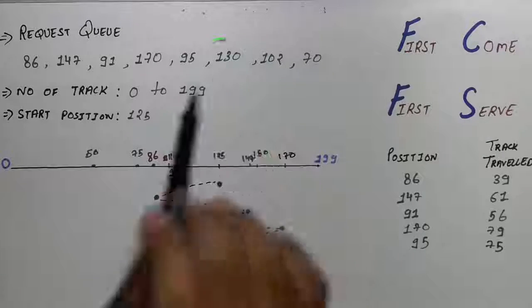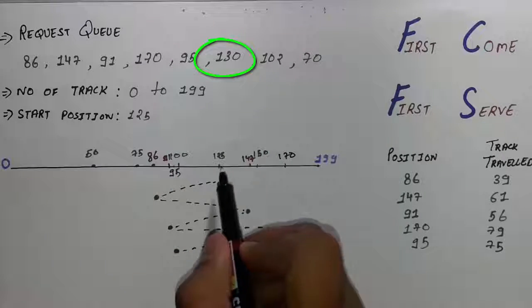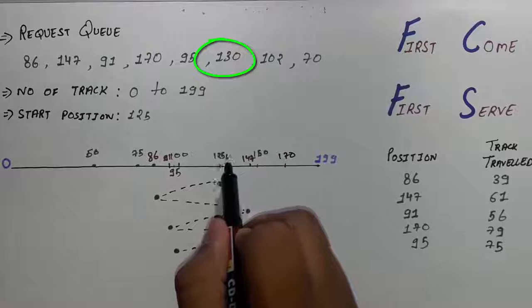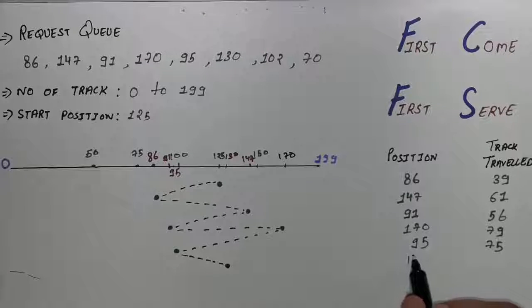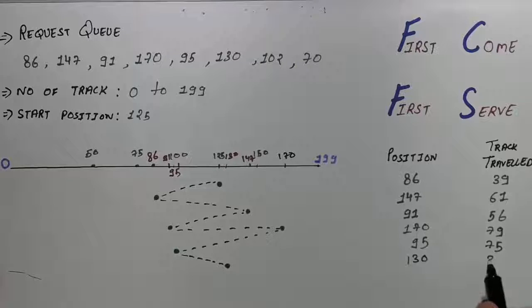You can see in the question the next number we have to move the header is here. Now our header is here and then again draw the line. So now we are on 130 and from the 130 to 95 the difference will be 35.